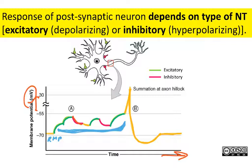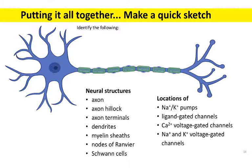Once we end up at the axon hillock where you have the voltage-gated channels and voltage reaches threshold, voltage-gated ion channels are responsible for depolarization and repolarization, then the sodium-potassium pump takes over. At the beginning of lecture two, I said that we needed to think about the different kinds of proteins embedded in the membrane of neurons, and hopefully you can now see why that's true.